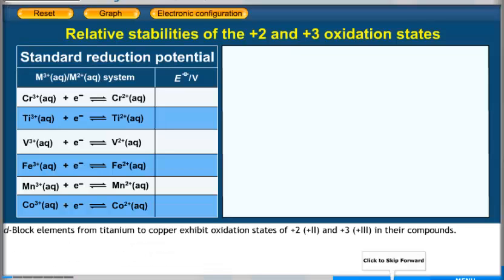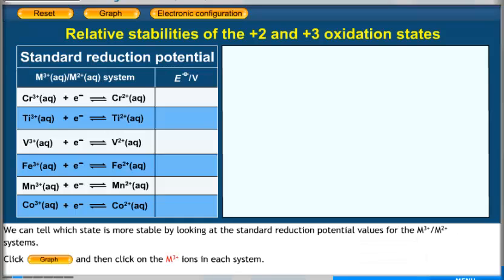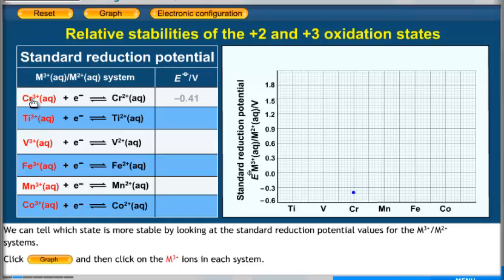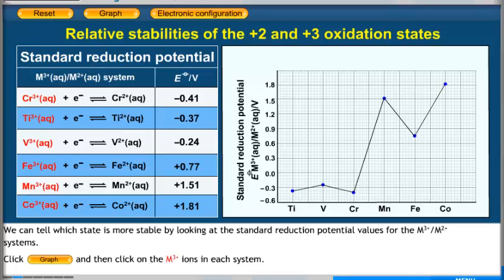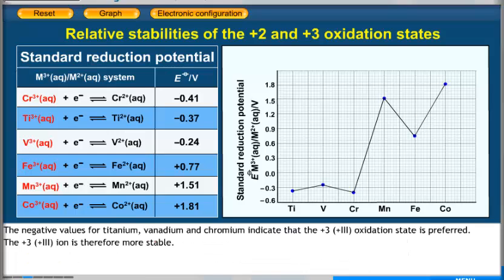D-block elements from titanium to copper exhibit oxidation states of plus 2 and plus 3 in their compounds. The negative potential values for titanium, vanadium and chromium indicate that the plus 3 oxidation state is preferred; the plus 3 ion is therefore more stable.